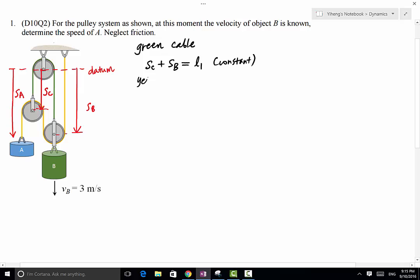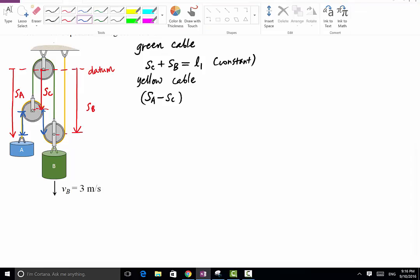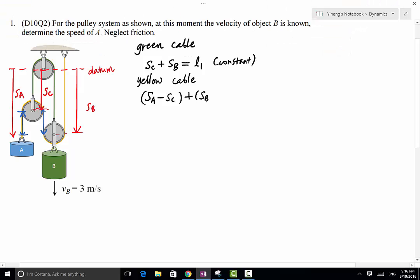And for the yellow cable, it is this length right here, which equals to SA minus SC, plus this length right here, which equals to SB minus SC, and then plus SB equals to L2. Again, L2 plus some constant length, some fixed length, equals to the total length of the yellow cable, which is also fixed. So now we have these two equations.